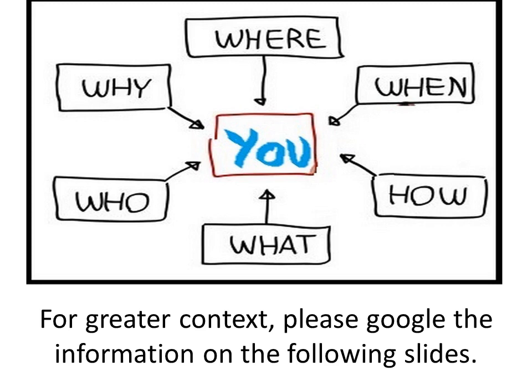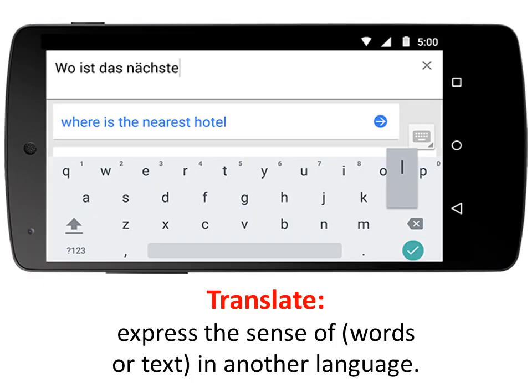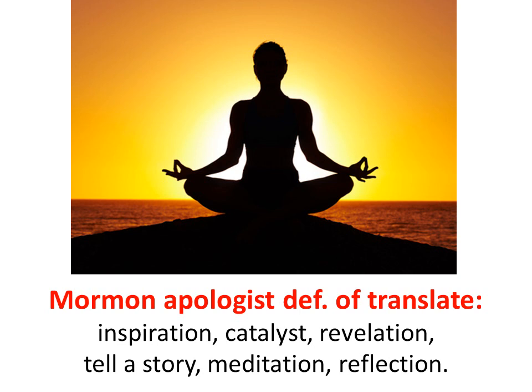I will give a brief summary. The common definition of 'translate' is to express the sense of words or text in another language — here we have a smartphone translating one language into another. But as Joseph Smith has gotten in trouble with his translations, Mormon apologists have had to redefine the word. Now they're saying it's inspiration, a catalyst, revelation. Translate just means to tell a story, or even to meditate or reflect. So they've completely redefined this word.